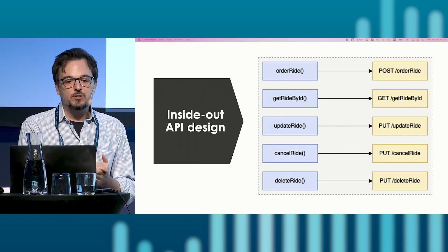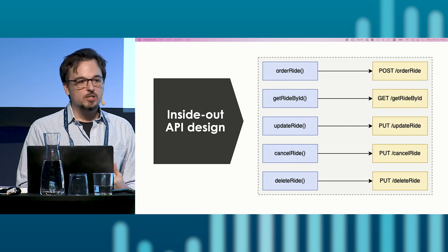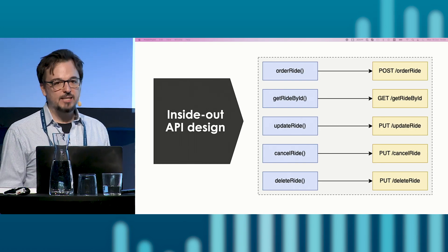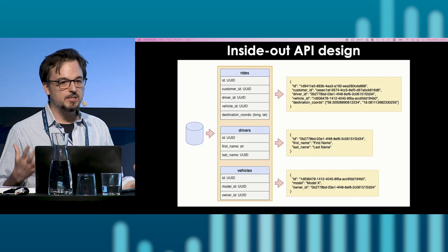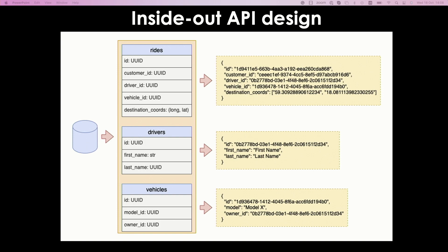A lot of this happens because we follow an inside-out approach — we have our system designed and implemented, we have functionality in place, and we just want to get some API for that. So functions, classes, and methods get their corresponding API endpoints, or we have database schemas and they get their own endpoints. Imagine a ride-sharing application: we may have a table for rides, a table for drivers, and a table for vehicles, and we put specific endpoints for each of them. Basically, we're creating an HTTP interface to the database, which is a major anti-pattern. We shouldn't be tightly coupling our data model to the API.